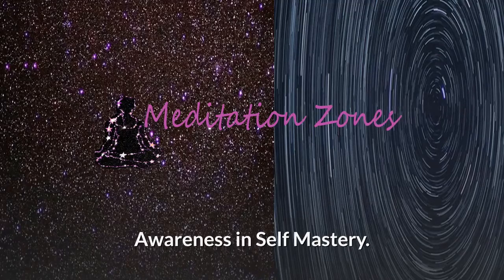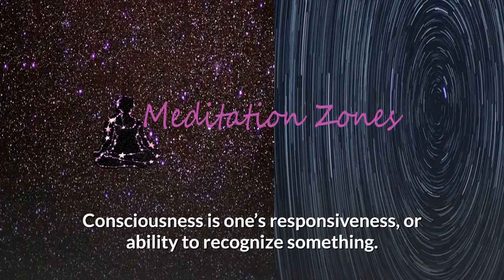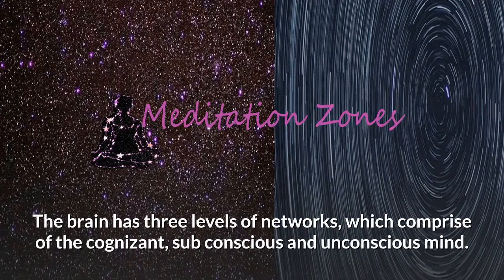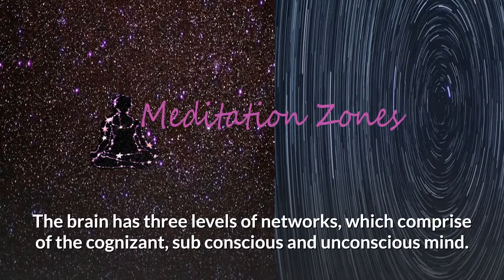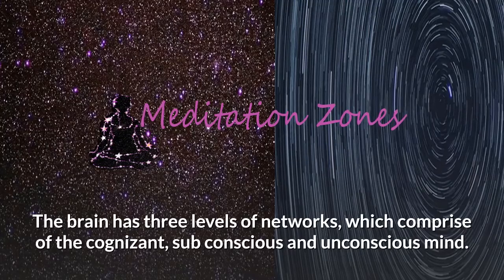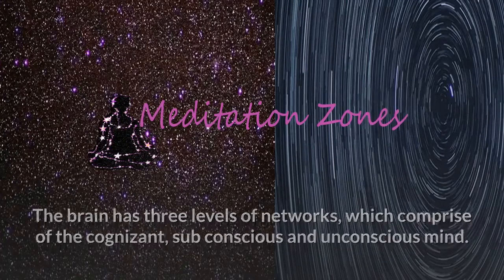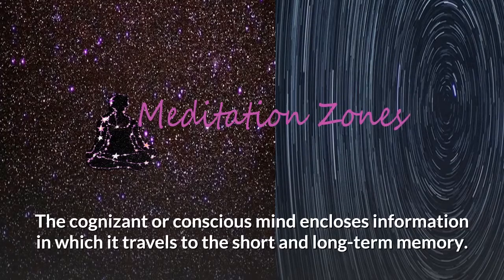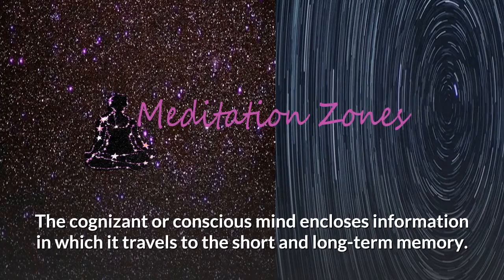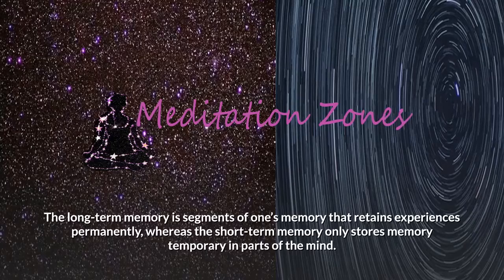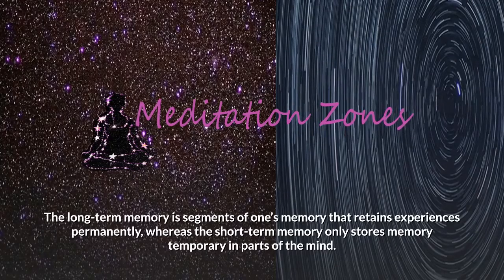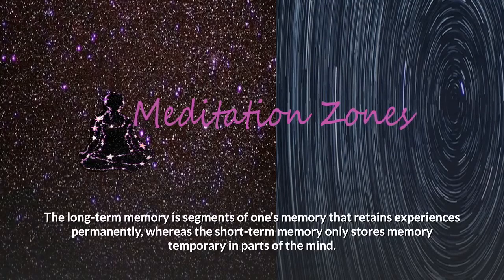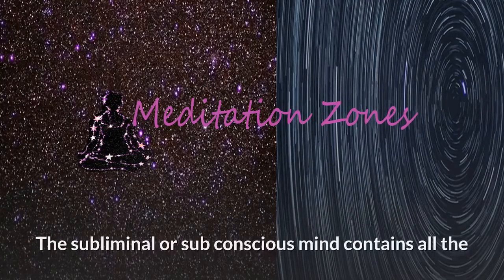Awareness in self-mastery: consciousness is one's responsiveness or ability to recognize something. The brain has three levels of networks which comprise the cognizant, subconscious, and unconscious mind. The cognizant or conscious mind encloses information which travels to the short and long-term memory. The long-term memory retains experiences permanently, whereas the short-term memory only stores memory temporarily.